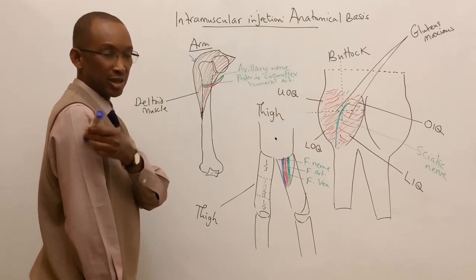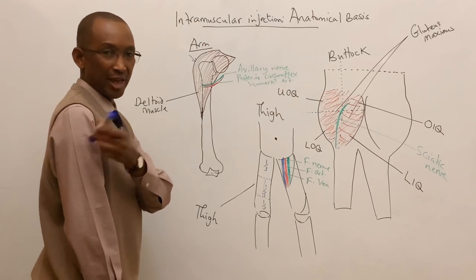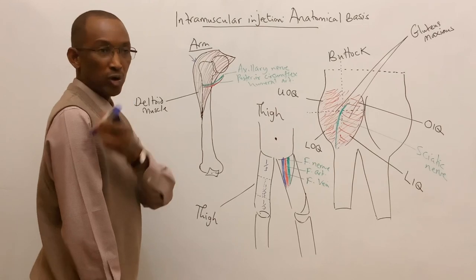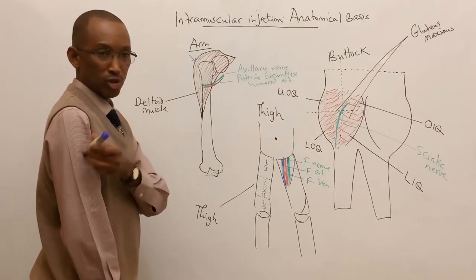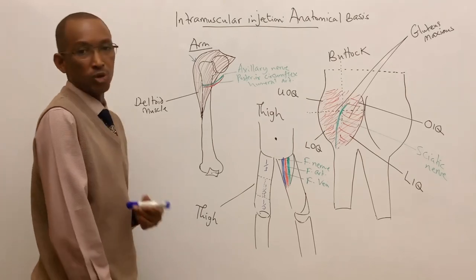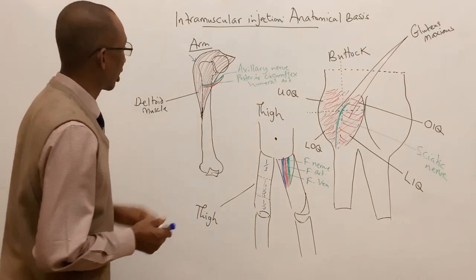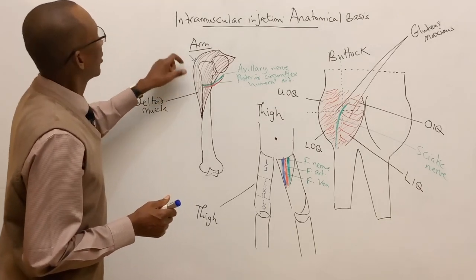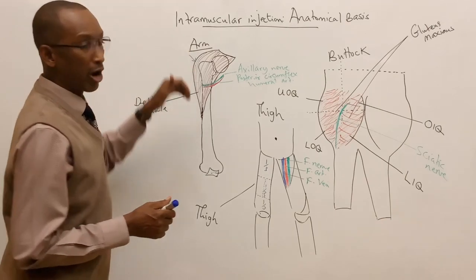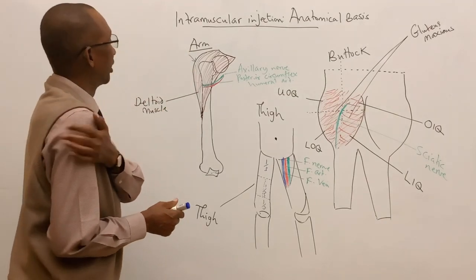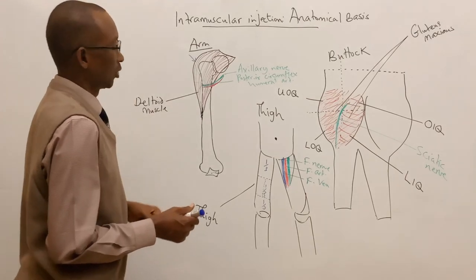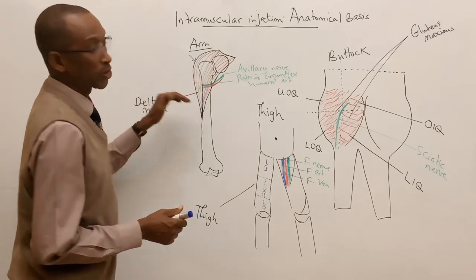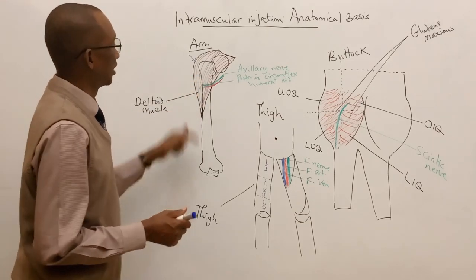After inserting the needle, withdraw the plunger: if blood appears inside the syringe, you are inside an artery and must not give the injection. If no blood is drawn, you are not inside a blood vessel and can proceed with injecting the drug. Always target the area of maximum convexity over the deltoid to avoid the neurovascular structures in the lower part of the deltoid.